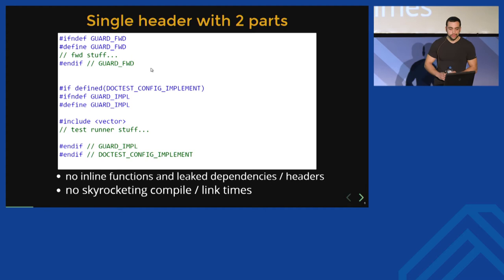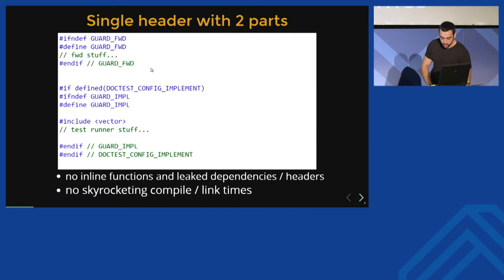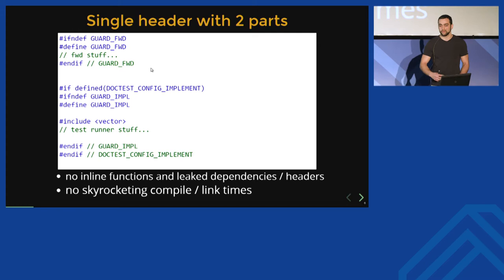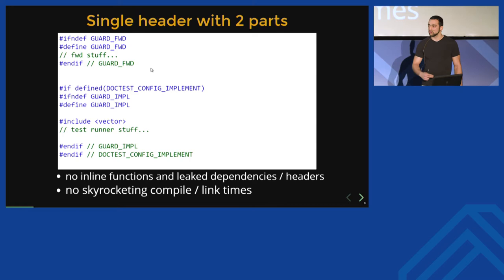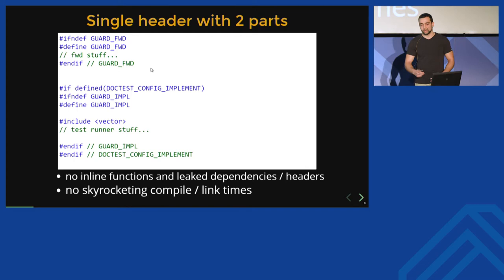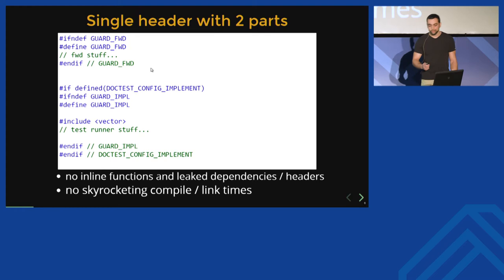Doctest being a single-header framework, there are two ways to approach that. We either make everything inline and all the dependencies are leaked everywhere, or we separate the header in two parts: first the forward declaration part — the public interface of the library — and then the second part, which is conditionally compiled in only one translation unit if some identifier is defined before including the framework header. That's where all the dependencies go — all the includes, including Windows.h for colors in the terminal — everything goes in the implementation part, compiled in only one translation unit. Everywhere else, you use only the forward declaration interface, keeping compile times and link times to a minimum.